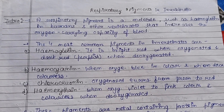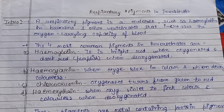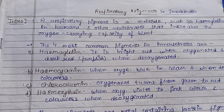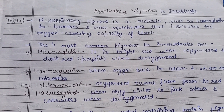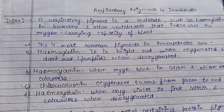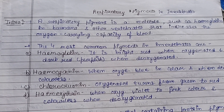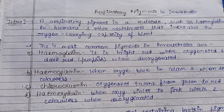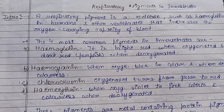Welcome to the channel. Today's topic is respiratory pigments in invertebrates. A respiratory pigment is a molecule — such as hemoglobin in humans and other vertebrates — that increases the oxygen-carrying capacity of the blood. These pigments or molecules are found in humans, other vertebrates, and invertebrates, and they increase the oxygen-carrying capacity of the blood.